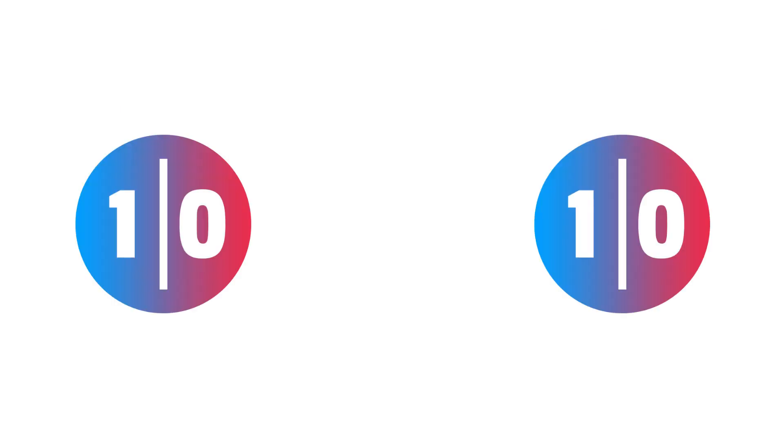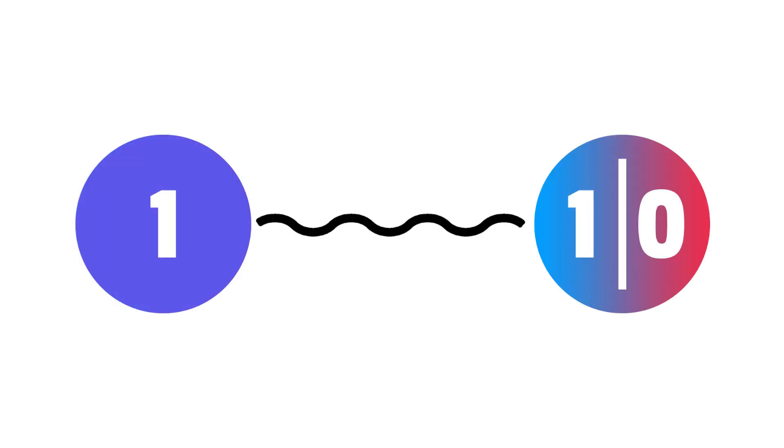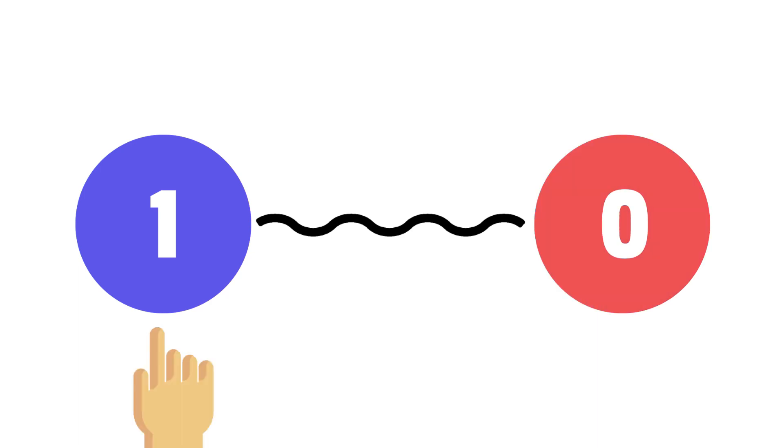New notion: entanglement. Two qubits in superposition can be entangled. This allows deducing the value of one qubit if we know the value of another. This one's a snitch.